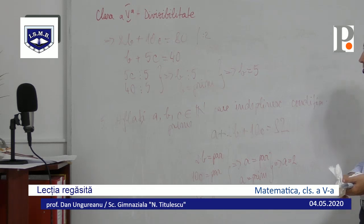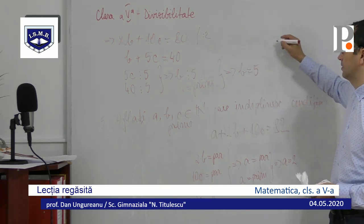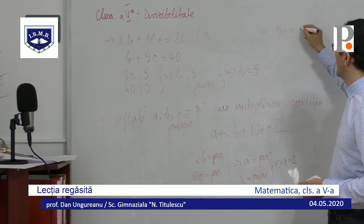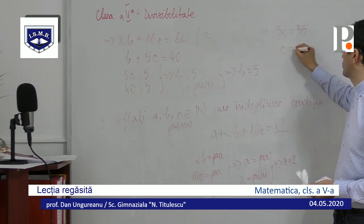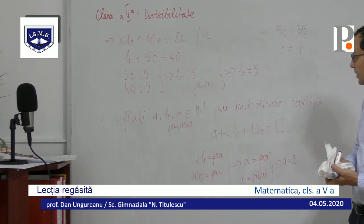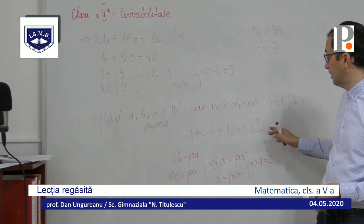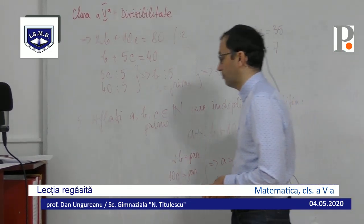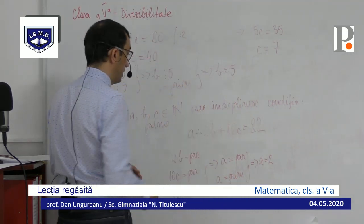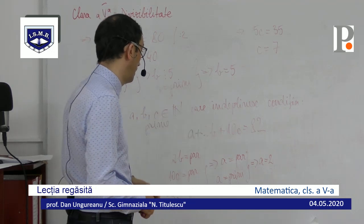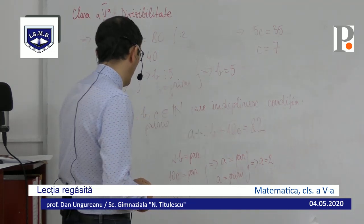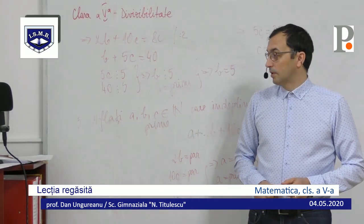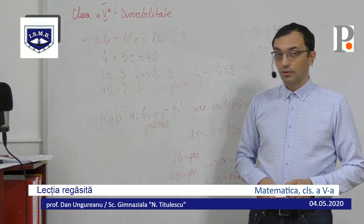Din aproape în aproape găsim toate numerele. Înlocuim din nou și obținem că 5C = 35, deci C = 7. Astfel am găsit toate cele trei numere prime: A = 2, B = 5, C = 7. O ecuație care poate părea grea, dar care se rezolvă foarte ușor cu divizibilitate. Nu am putea rezolva această ecuație dacă nu ar fi fost numere prime și naturale. Acestea fiind zise, cred că pentru azi este suficient. Vom reveni cu alte lecții - urmăriți-ne pe site-ul inspectoratului. O zi bună!